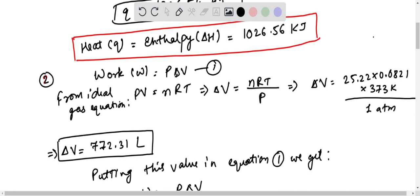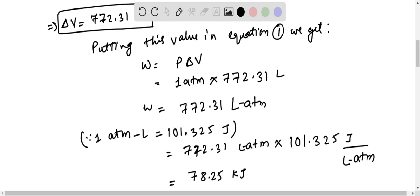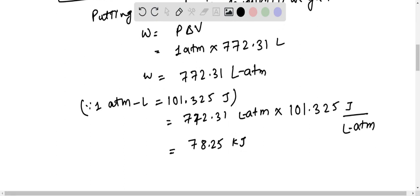R is gas constant, you need to remember that is 0.0821. So now it will give us 772.31 liter ATM. This we have got in liter ATM form but we want in Joules. So this is multiplied with 101.325 Joules per liter ATM.